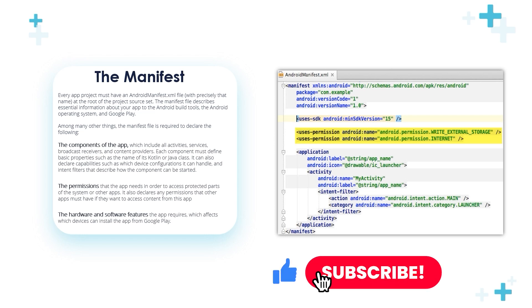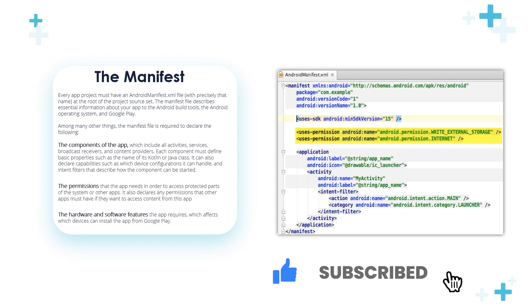In general, the manifest file is a necessary file in Android applications. It contains three main declarations: the components of the app — activities, services, broadcast receivers, and content providers — the permissions the app needs, and the hardware and software features the app requires.